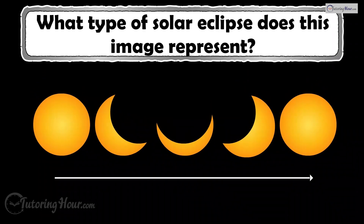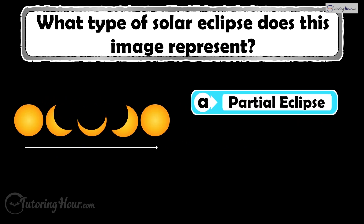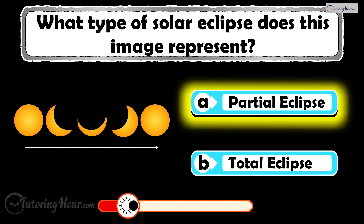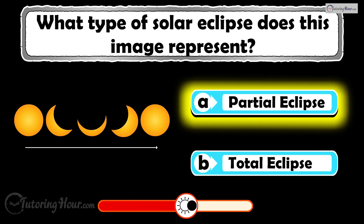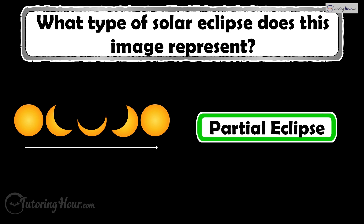What type of solar eclipse does this image represent? Is it A, partial eclipse, or B, total eclipse? The correct answer is a partial solar eclipse.